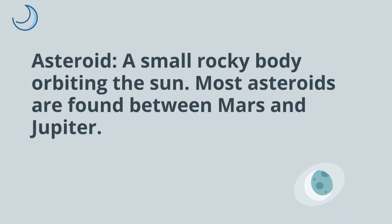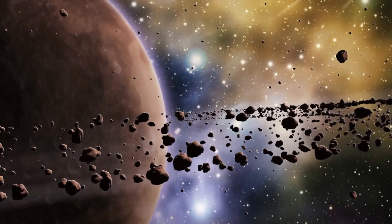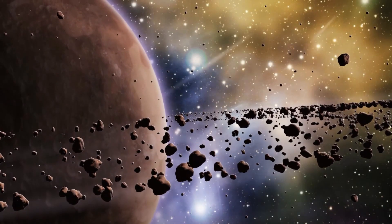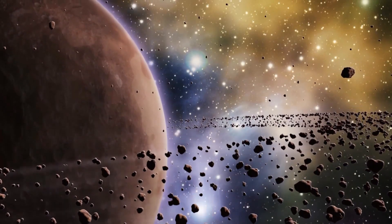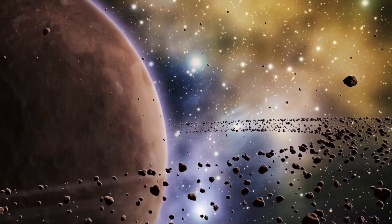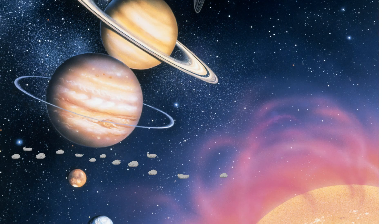An asteroid is a small rocky body that orbits the sun. Most asteroids are found between Mars and Jupiter. Some asteroids are metallic while others are rich in carbon, which gives them a cold black color. Most of the asteroids in our solar system are found in a region called the main asteroid belt, which is found between the orbits of Mars and Jupiter.